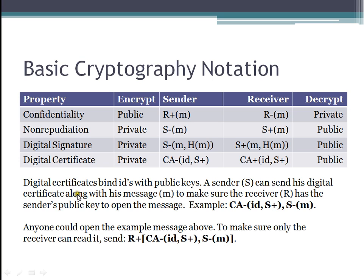A sender can send his digital certificate along with a message to make sure the receiver has the public key to open the message. For example, if I'm the sender, I might send a message encrypted with my private key, but I'll send the certificate so that the person has my public key to open the message. Now the problem with this is anyone could open the message because they have the public key. If you want to make sure that only the receiver can read it, then you send that whole message encrypted with the receiver's public key, and the receiver can open it with their private key. So that way you have non-repudiation, confidentiality, and integrity, assuming that the message was signed.